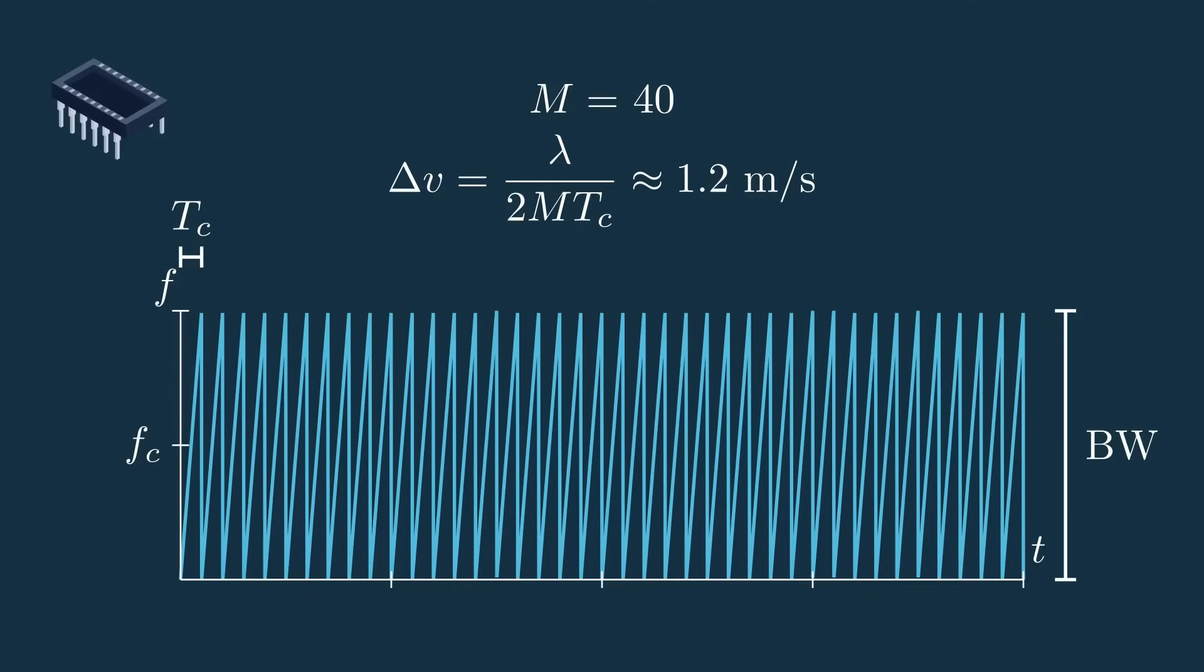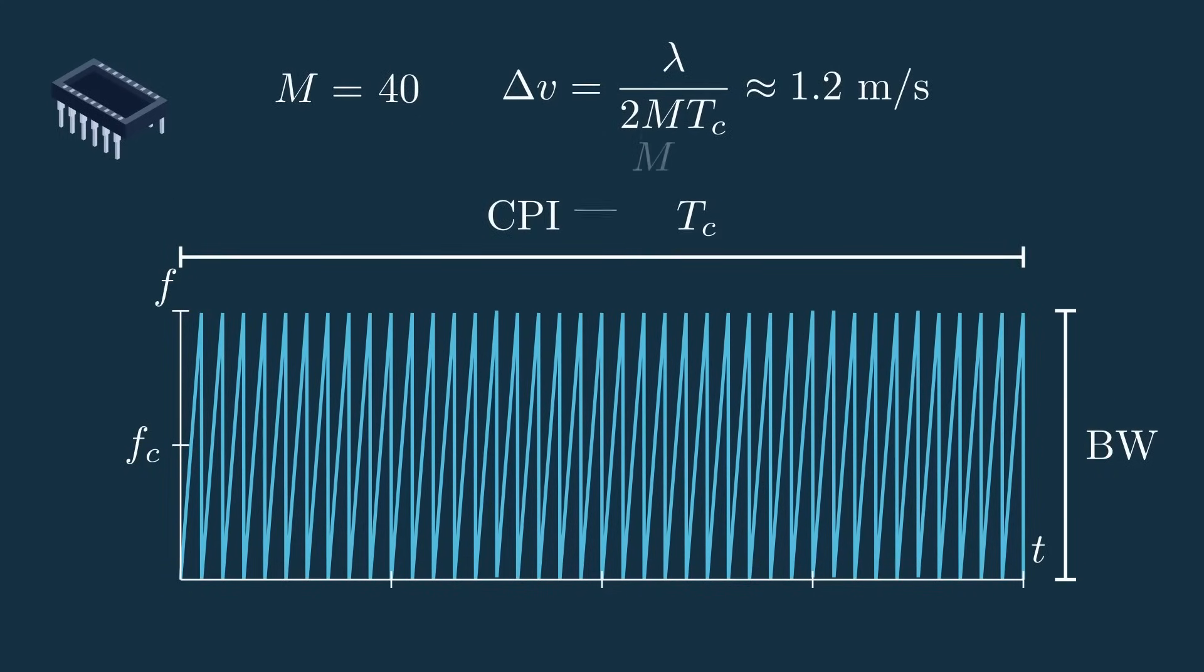Now this would mean that we can differentiate between targets if they're traveling at speeds that differ by at least 1.2 meters per second. So then here we have this collection of chirps that again is called the coherent processing interval, or CPI.